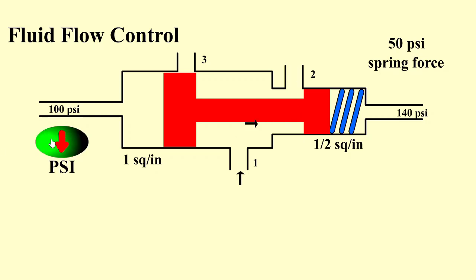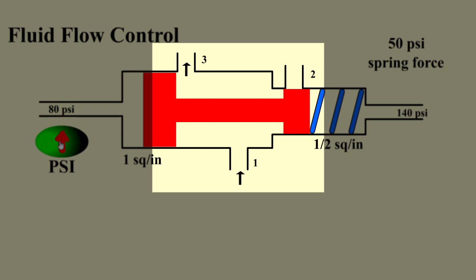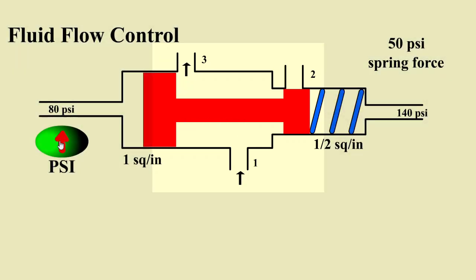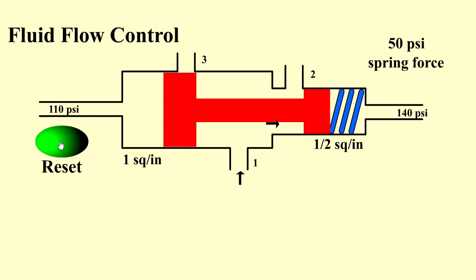If we lower the pressure on the left hand side from 100 psi down to 80 psi, the force on the right hand side pushing the valve to the left becomes dominant, closing off port 2 so fluid travels from port 1 out port 3. This is what we use to control fluid flow through a spool valve. If we raise the pressure on the left hand side back up to 110, the valve moves back and fluid is sent from port 1 to port 2, closing off port 3.